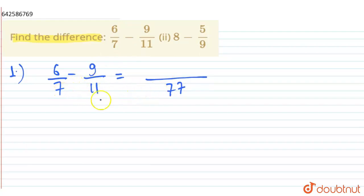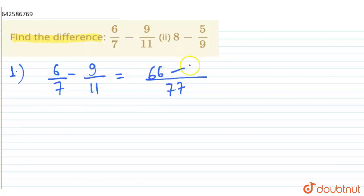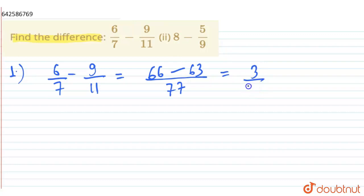For this, we find the LCM of the denominators, that is 7 and 11. We get 6 into 11, which is 66, minus 9 into 7, which is 63. This gives us 3 by 77, which is our answer.